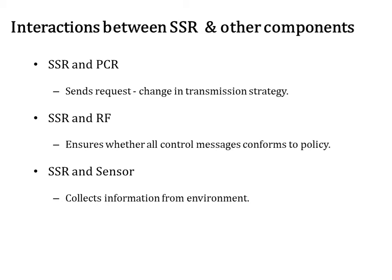Next comes the interaction between SSR and RF. All incoming messages from the radio frequency first go to the radio platform. The data message goes to the information sink, whereas the control message ends up in the SSR itself. Similarly, all outgoing control messages are generated by the SSR and passed through the policy enforcer to ensure that all control messages conform to the policy. The policy enforcer then forwards the control message to the radio platform, where the outgoing data and control messages are merged and sent out through the RF.